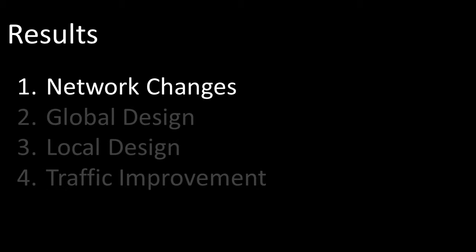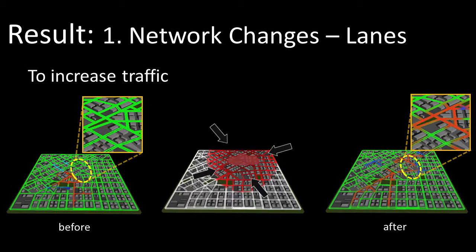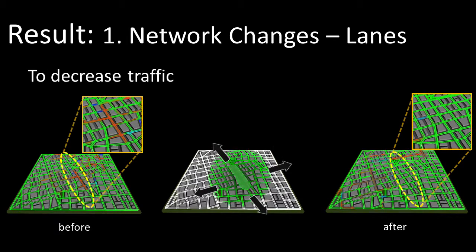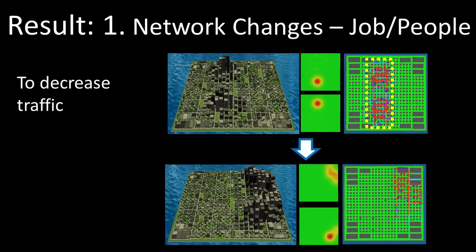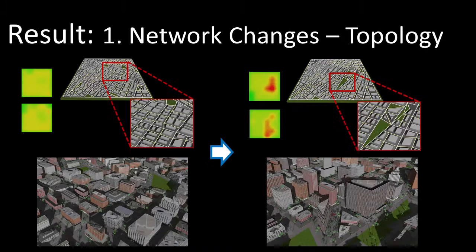Our approach alters a road network using four possible changes. The direction and number of lanes can be changed to decrease or increase local traffic. Or, the distribution of jobs and people can be altered, which may lead to changing the network topology.